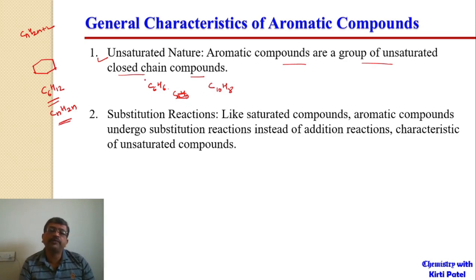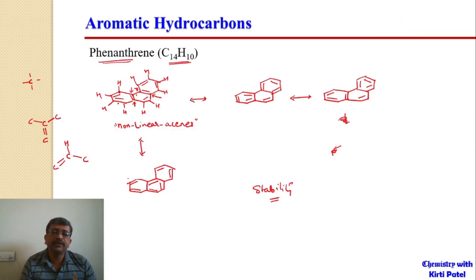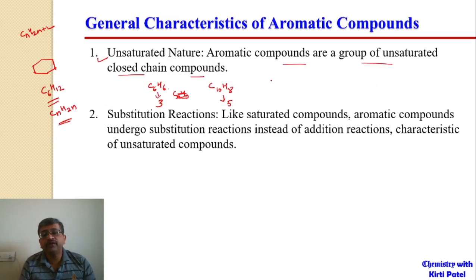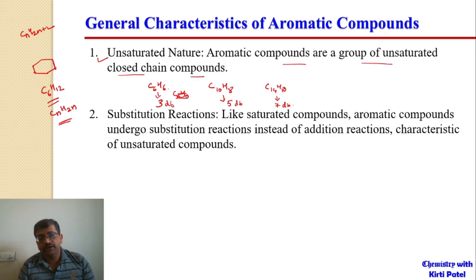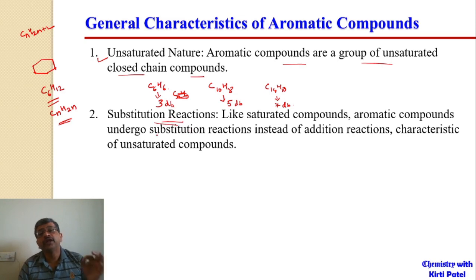The number of double bonds in aromatic compounds is very large. Benzene has three double bonds, and phenanthrene and anthracene each have seven double bonds. The total number of double bonds present in aromatic compounds is quite large compared to acyclic compounds.